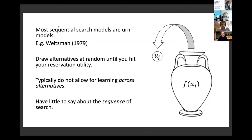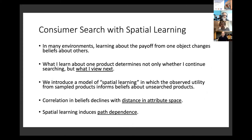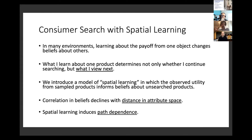This model is widely used but typically doesn't allow for learning across alternatives - sampling a product tells you about the utility from that product but not about other products. The start of this paper is the observation that in many environments, learning about the payoff from one object may change beliefs about other objects. For example, shopping for a TV on Amazon and reading reviews about a technology might inform how much you'd like other products of the same brand or technology.